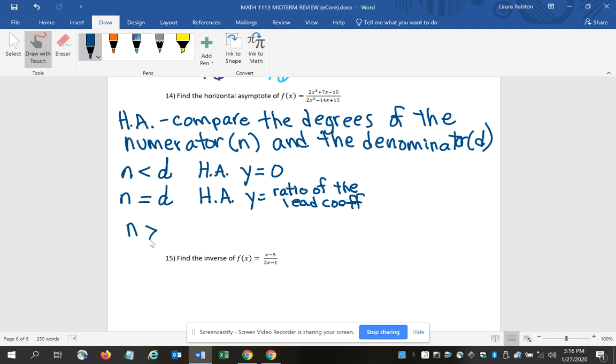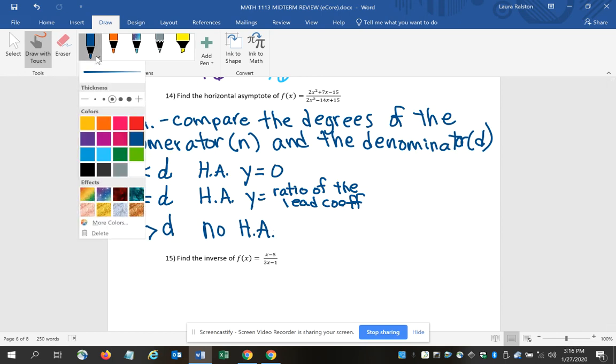If n is greater than d, if the degree of the numerator is greater than the denominator, there is no horizontal asymptote. So either you want to write those rules down on your note sheet that you can use for the midterm or I suppose you could memorize them. It would be easier if you write them on your note sheet.